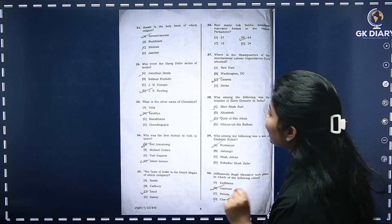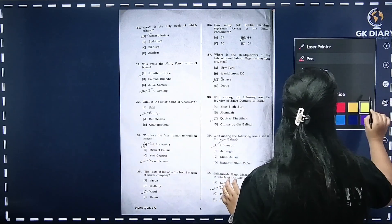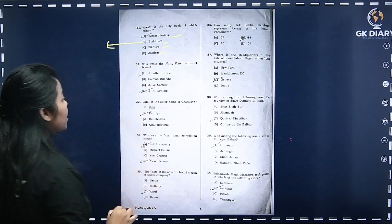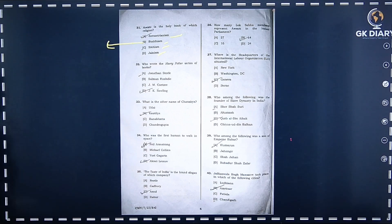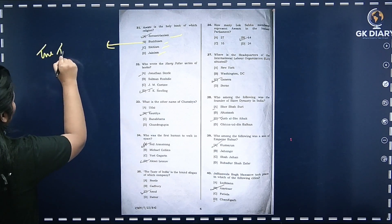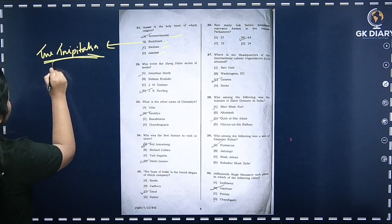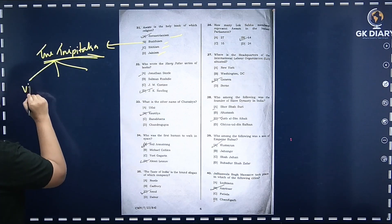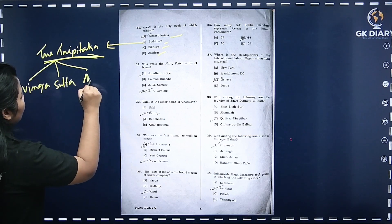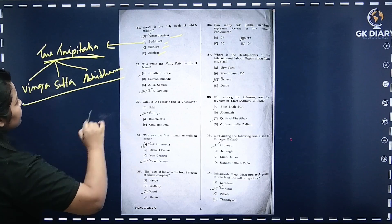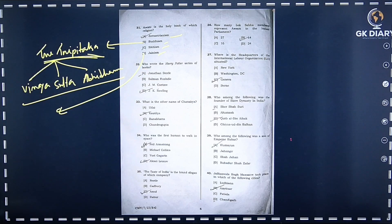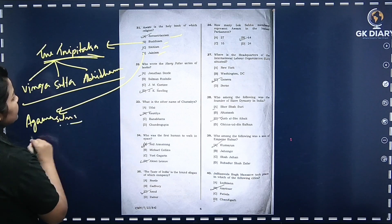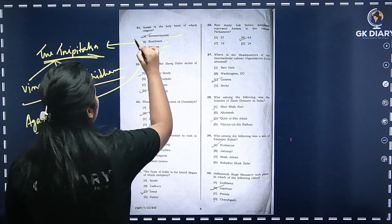Next question: Avesta is the holy book of which religion? Options are Zoroastrian, Buddhism, Sikhism, Jainism. For Buddhism, the holy book is the Tripitaka, which has three parts: Vinaya, Sutta, and Abhidhamma Pitaka. For Jainism, the holy book is the Agama Sutra. The Avesta is the holy book of Zoroastrianism. The correct option is A.